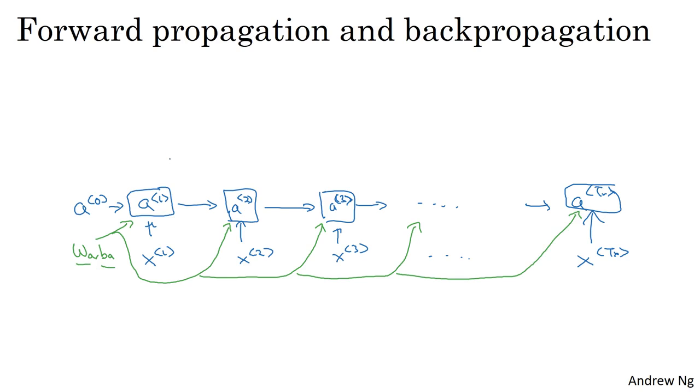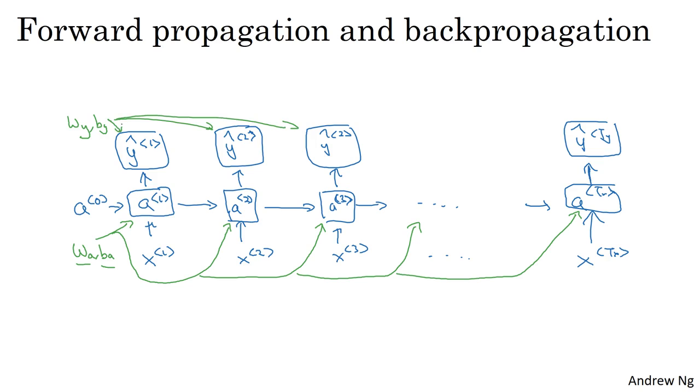Let's keep fleshing out this graph. Now, given a1, your neural network can then compute the first prediction y hat 1, and then the second time step y hat 2, y hat 3, and so on, with y hat ty here. And let me again draw the parameters of a different color. So to compute y hat, you need the parameters wy as well as by. And this goes into this node as well as all the others.